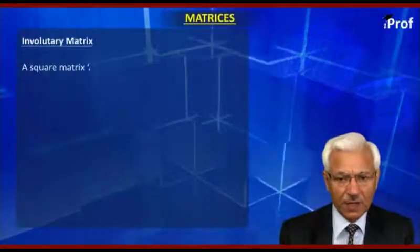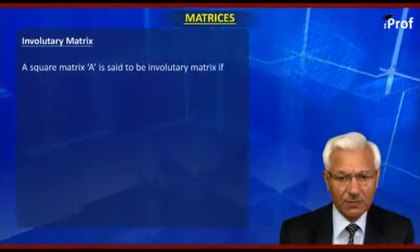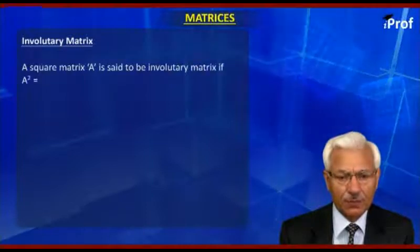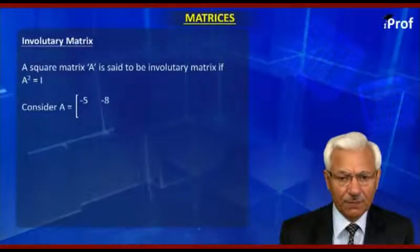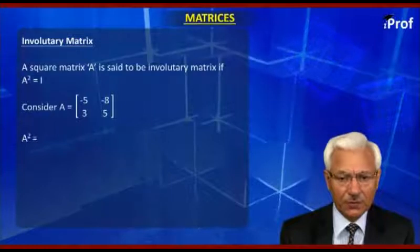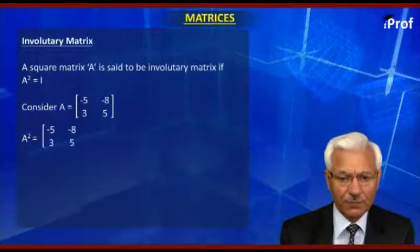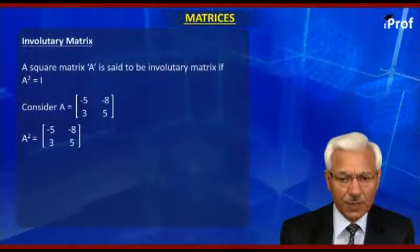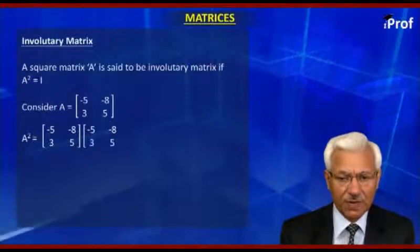A square matrix A is said to be an involutory matrix if A squared is equal to the identity matrix. Consider A equal to [-5, -8; 3, 5]. We compute A squared, that is A into A: [-5, -8; 3, 5] into [-5, -8; 3, 5].